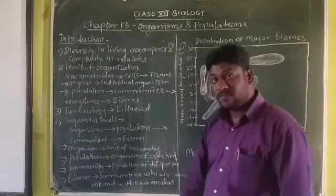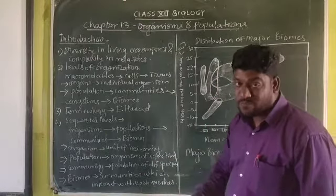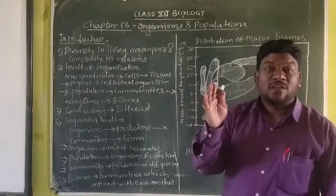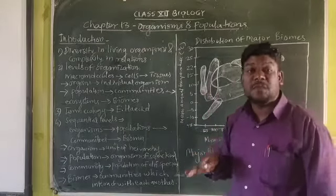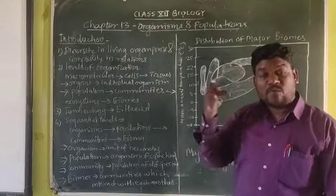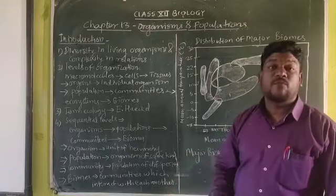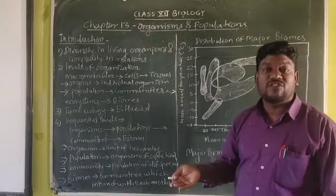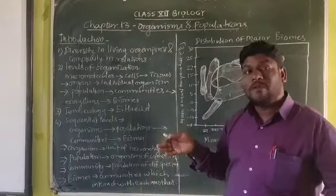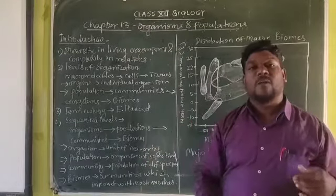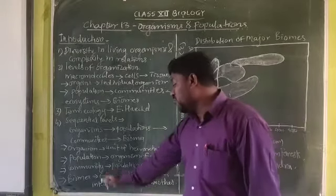What is population? It is organisms of the same kind — a group of organisms, but they must be of the same kind. Human beings ka population alag, cows ka population alag, buffaloes ka population alag, goats ka population alag. So same kind ke organisms jo rahenge, ek group mein rahenge, that group will be known as the population of that particular organism.